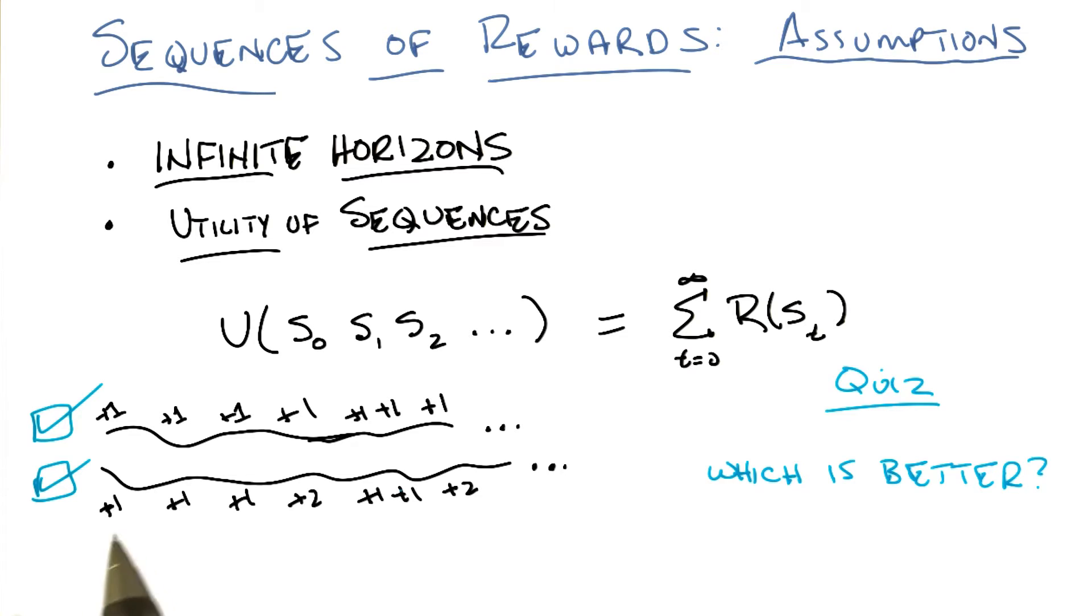So what would you say the utility of the sequence along the bottom actually is? One plus one plus two plus one plus one plus two plus dot dot dot. Which is equal to? Infinity, I guess. That's right. What about the utility of the top one? One plus one plus one plus, that's also infinity. Yep.